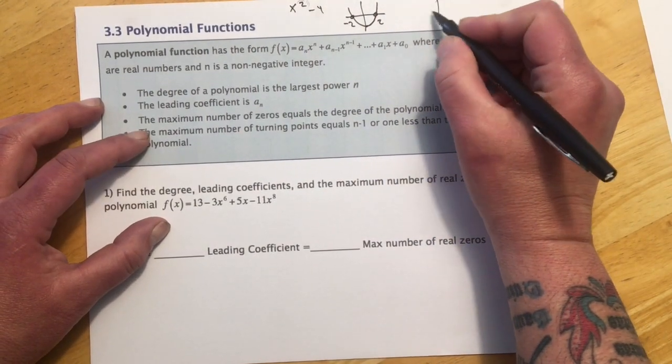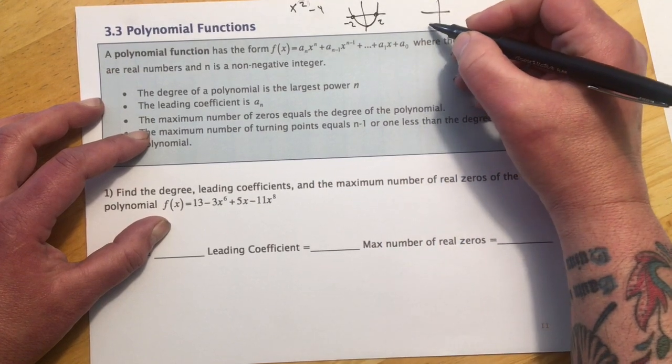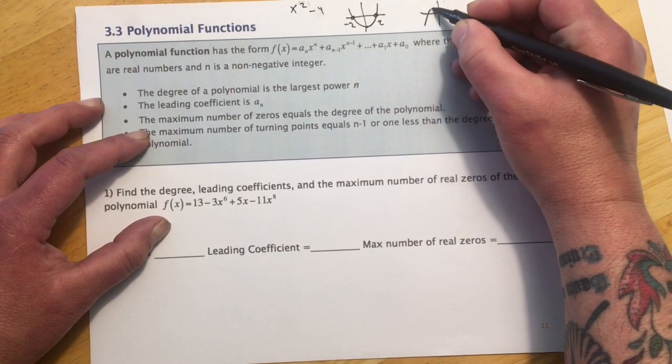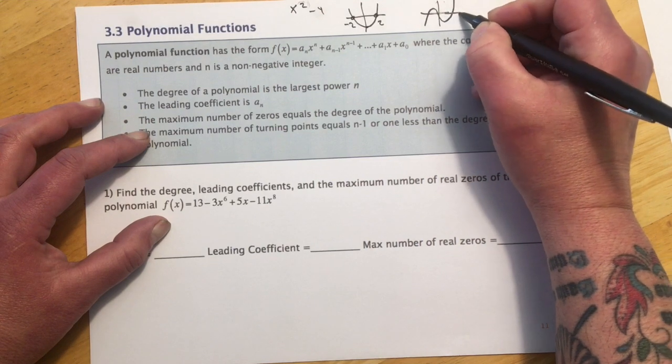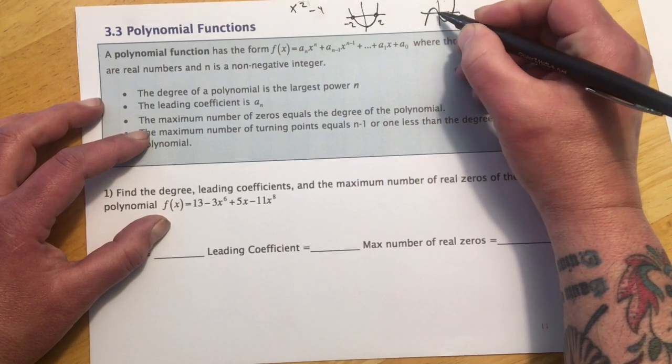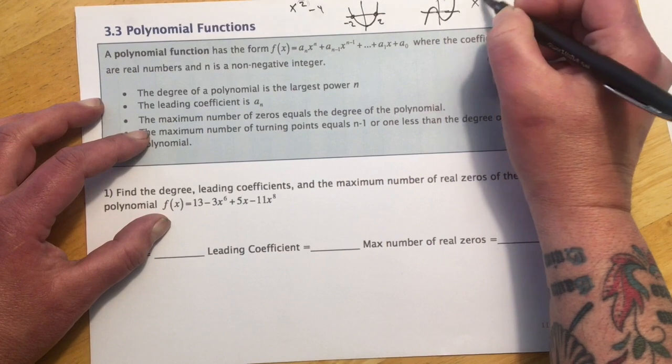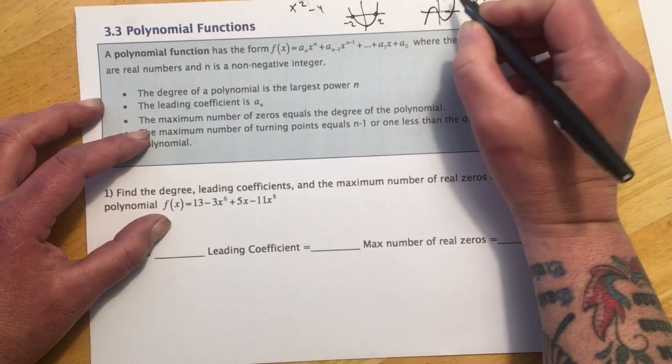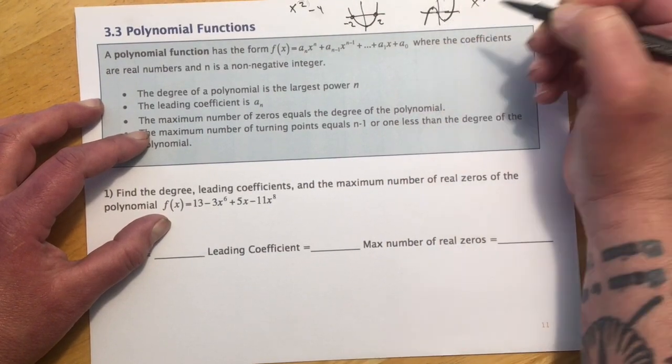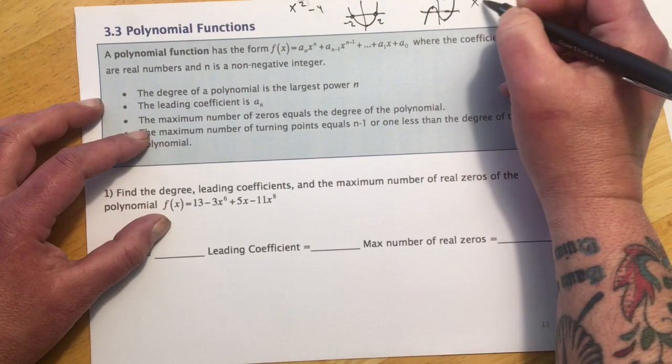If we're looking at a cubic, and not just plain x cubed, but one that had some extra terms to it, it could look something like that. And so we'd see it had 1, 2, 3 intercepts, because its leading term is x cubed, and it has 1, 2 turning points, so 1 less than the degree.